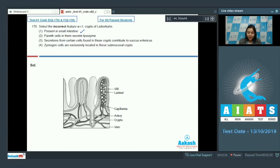As we can see in the diagram here, these are the crypts of Lieberkühn. This is also correct option. Number 3, secretions of certain cells found in these crypts contribute to succus entericus. The enzymes which are secreted by the brush border cells along with the mucus which is secreted by the Brunner's glands present in the submucosa form the succus entericus. So this option is also correct.